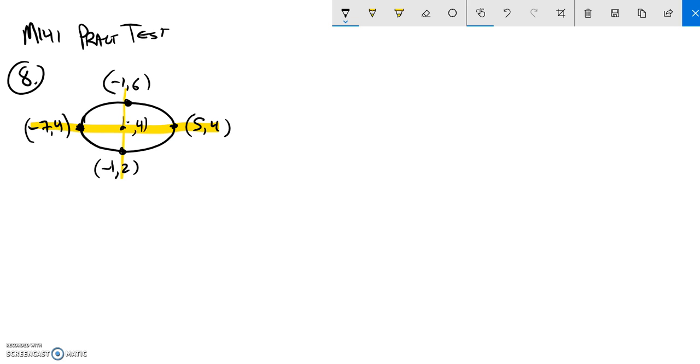And if I go in this direction, my x is negative 1. So, I know that I'm going to have an x plus 1 squared plus a y minus 4 squared equals 1. And those are going to both be over some values.